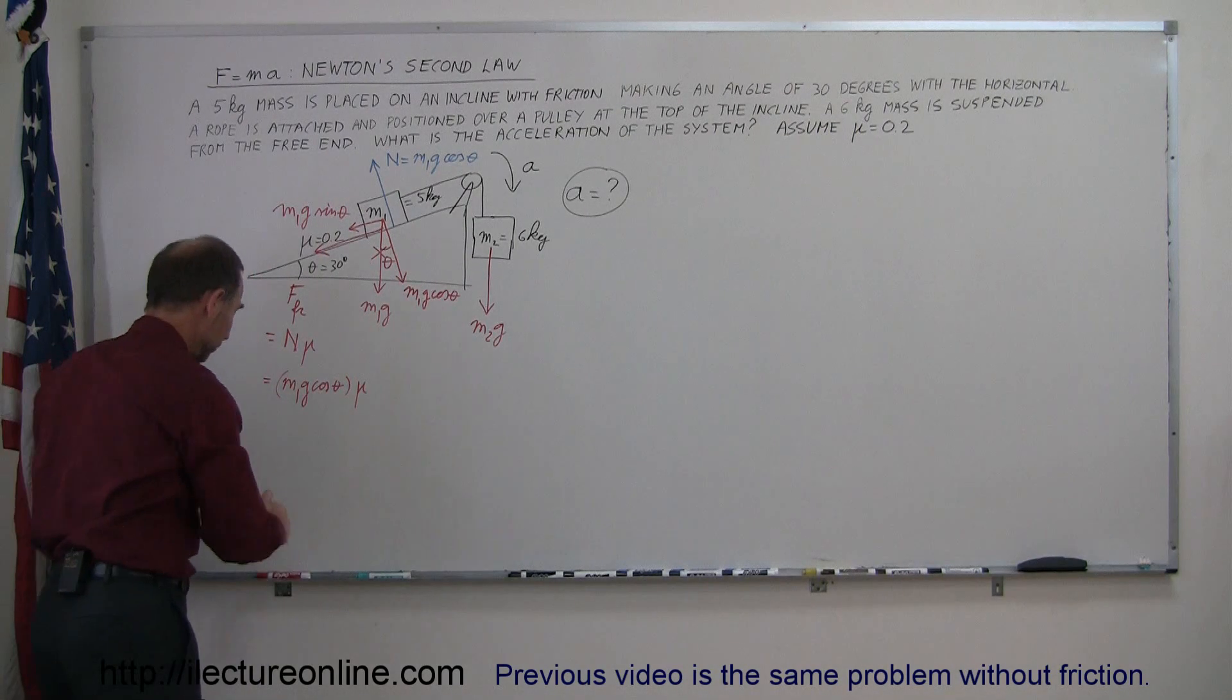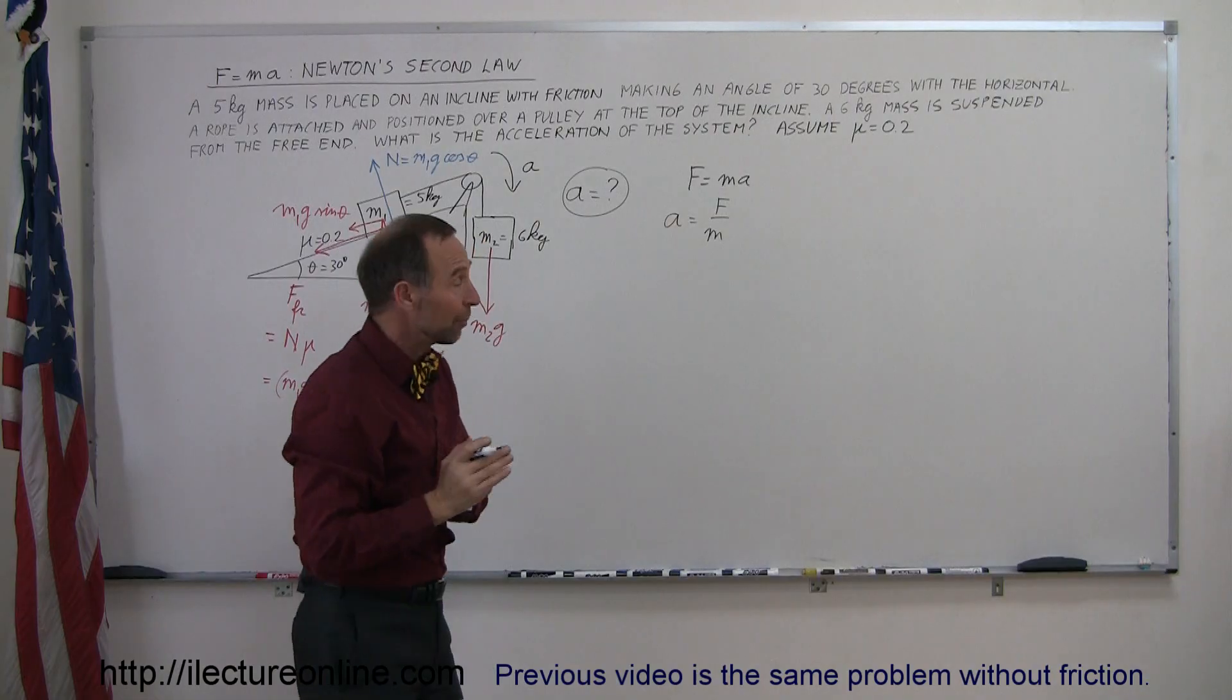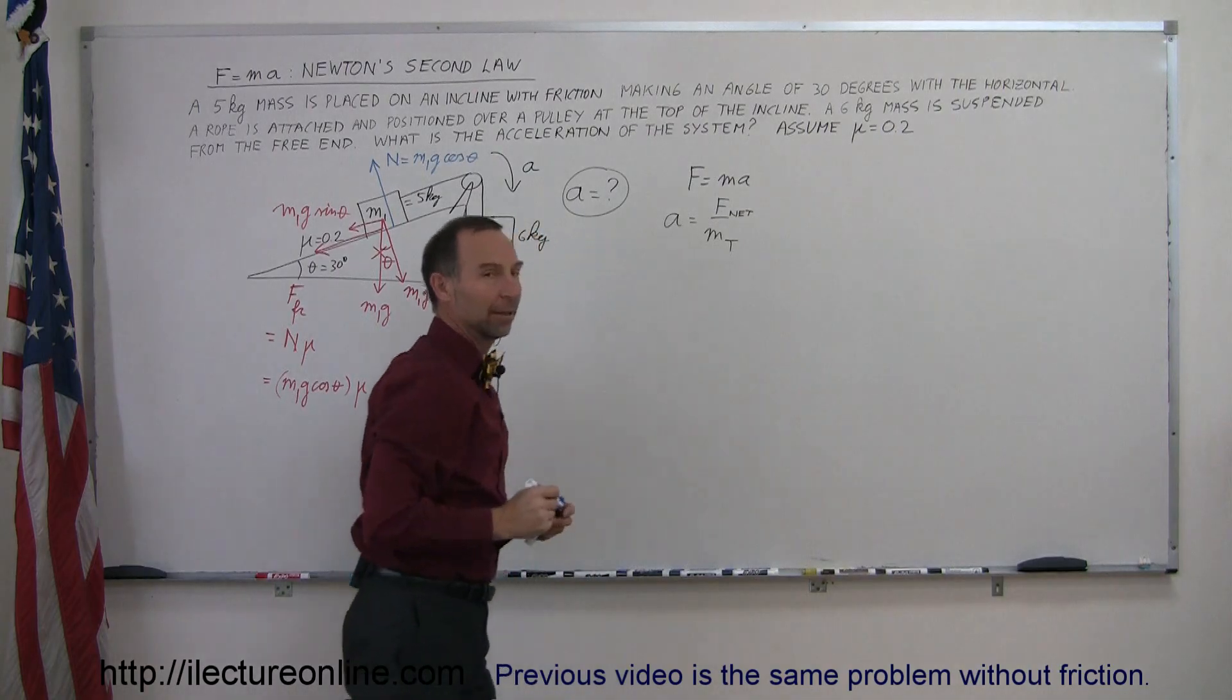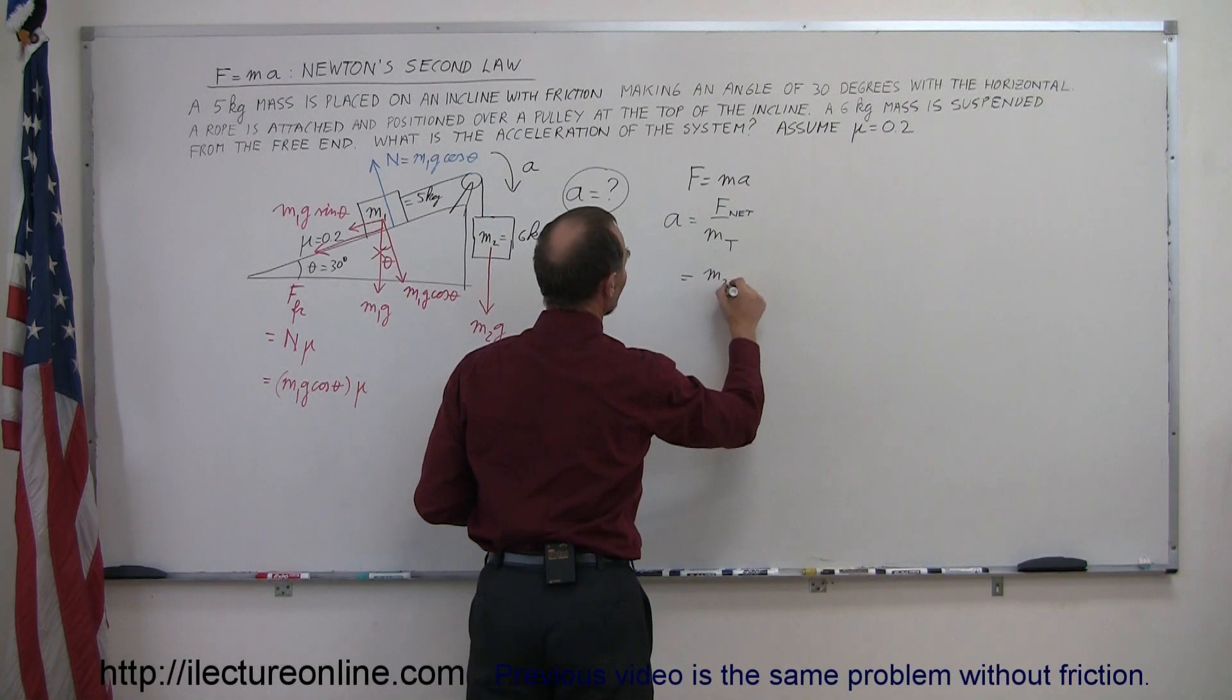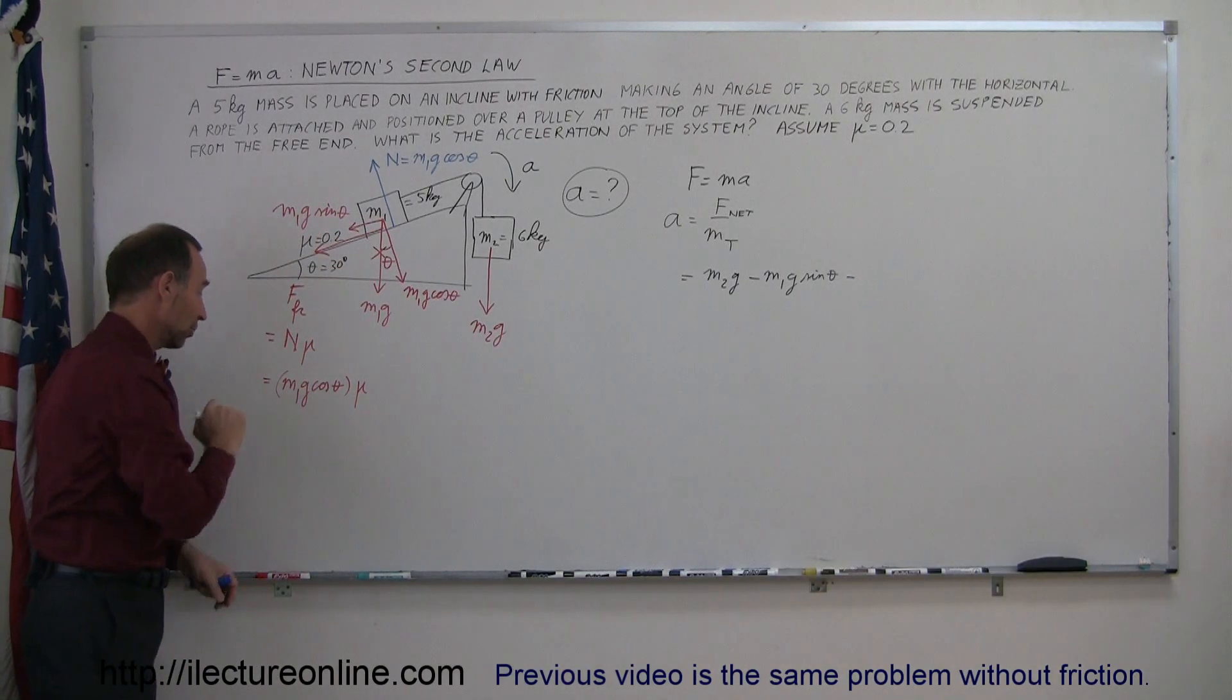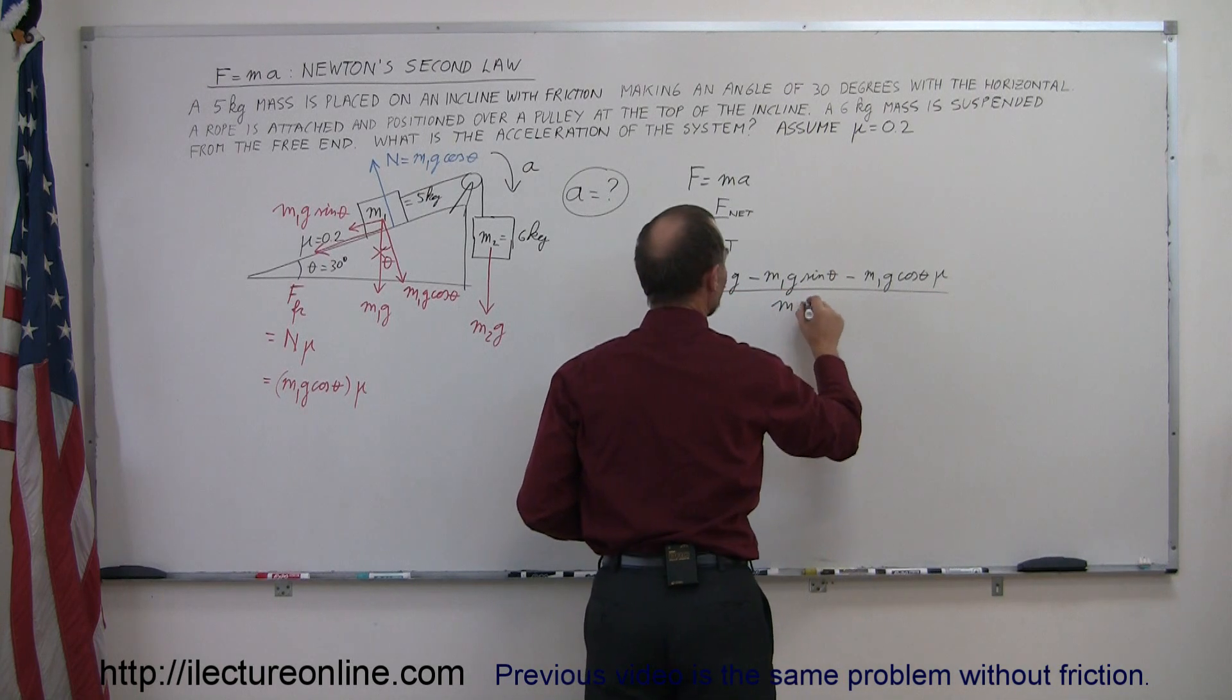So when we write the equation, F equals ma, and we rearrange this equation so we have a equals F over m, understanding that F represents the net force on the system, only the forces that cause acceleration, and m represents the total mass of the system. Plugging in what those are, the net force will be m2g which aids acceleration, minus m1g sine theta which opposes acceleration, and minus the friction force which also opposes acceleration, which is m1g cosine theta times mu. That whole thing is divided by the sum of the two masses, m1 plus m2.